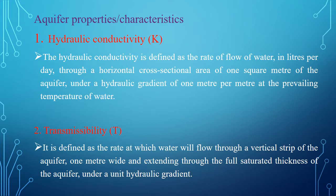We will see the different properties of aquifer. The first important property of the aquifer formation is hydraulic conductivity, which is denoted by letter K. Hydraulic conductivity is defined as the rate of flow of water in liters per day through a horizontal cross-sectional area of 1 square meter of the aquifer under a hydraulic gradient of 1 meter per meter length at a prevailing temperature of water.